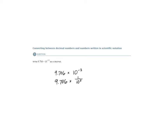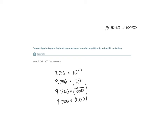What is 10 to the 3? 10 to the 3 is 10 times 10 times 10, so 10 to the 3 power is 1,000. We can write it as 9.706 times 1 over 1,000. What is 1 divided by 1,000? That's 0.001 — the thousandths place. So we have 9.706 times 0.001.